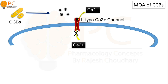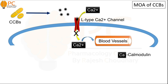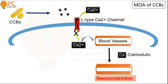Ultimately, they inhibit the calcium-dependent contraction on blood vessels and myocardial cells. Basically, in the blood vessels, calcium binds with the calmodulin and causes vasoconstriction. So the vasoconstriction effect due to calcium depends on the calcium-calmodulin pathway in the blood vessels.